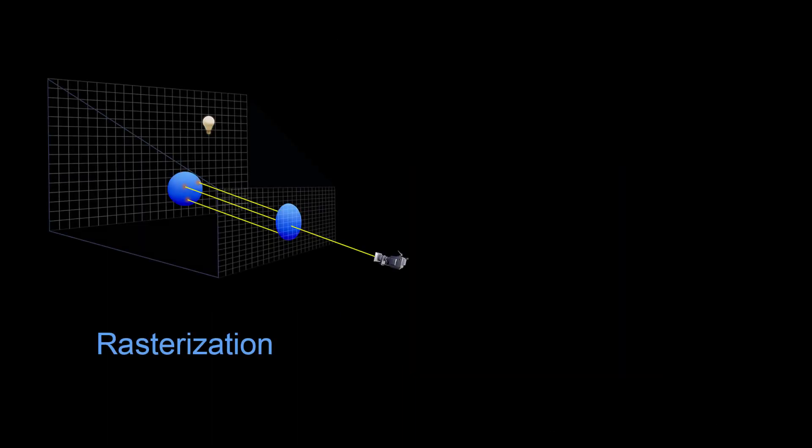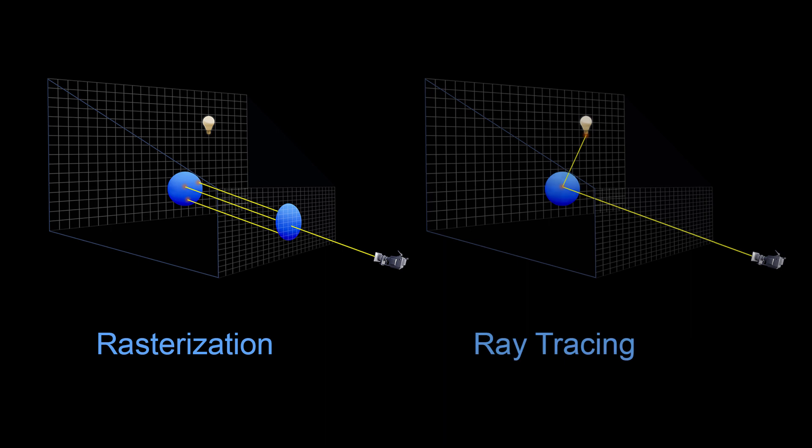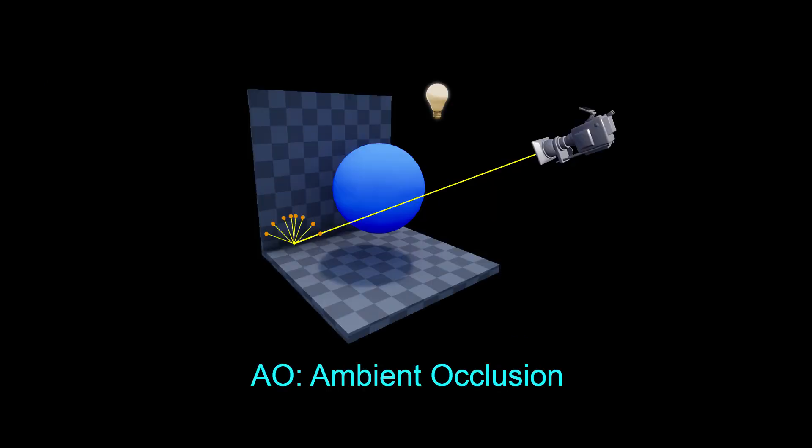With traditional rendering, the process of rasterization is typically utilized whereby objects within a scene are created by a virtual mesh of triangles. In contrast, ray tracing relies on a system of bouncing photons from object to object before reaching the camera to produce an image. This leads to some very big advantages in visual quality.